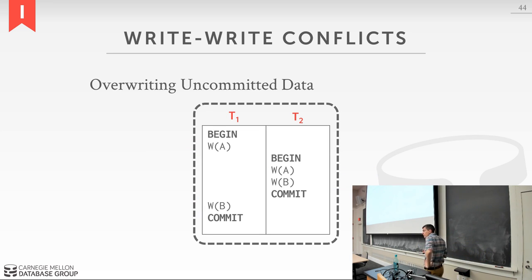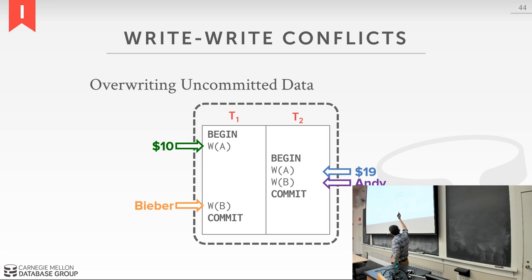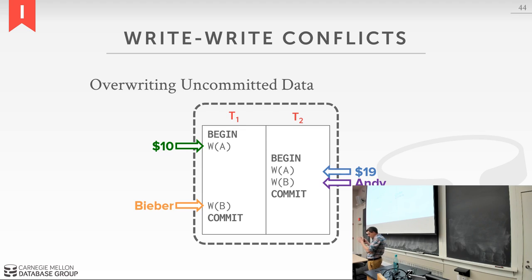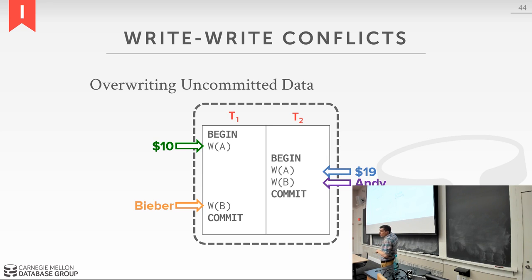A write-write conflict: T1 writes $10 to A, T2 writes $19 to A; then T2 writes 'Andy' into B and commits; then T1 writes 'Justin Bieber' into B and commits. Now the database contains $19 with 'Justin Bieber' — a mix of updates from T1 and T2 that should never happen. Transactions are supposed to be isolated from each other. It should either be $10 with Bieber, or $19 with Andy — not a combination.